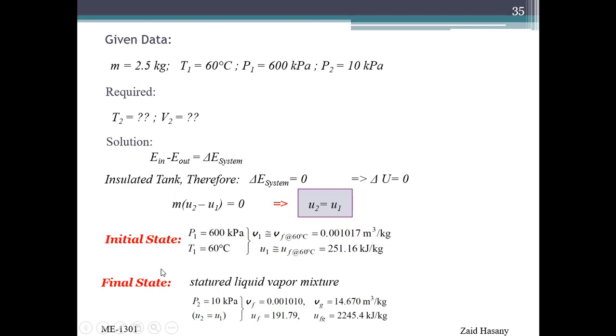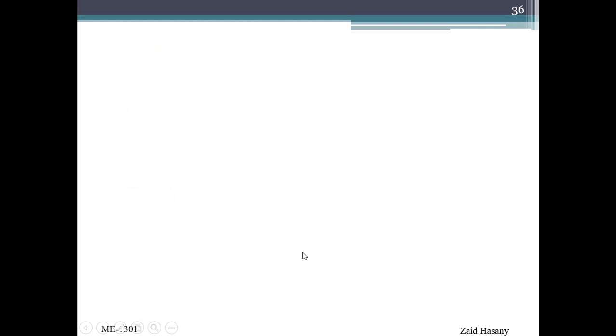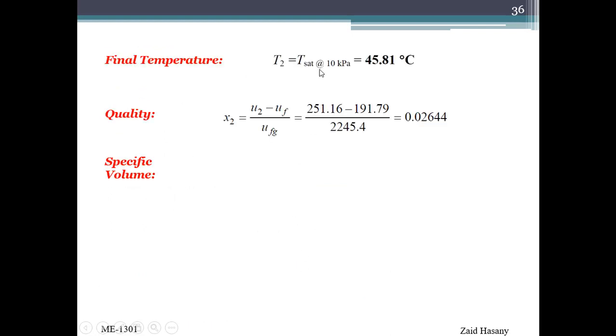After the expansion, the temperature will drop and we assume the system undergoes into a saturated liquid-vapor mixture. At P2 equal to 10 kPa, we get vf from table A-5. U2 equals u1 because it's completely insulated. At 10 kPa, the uf value is 191.76 kJ/kg and ufg value is 2245.4 kJ/kg from table A-5. At 10 kPa, T2 is 45.81 degrees Celsius.